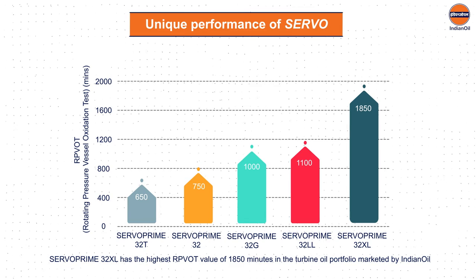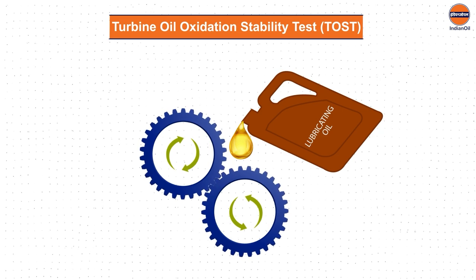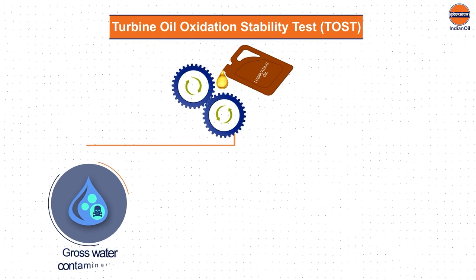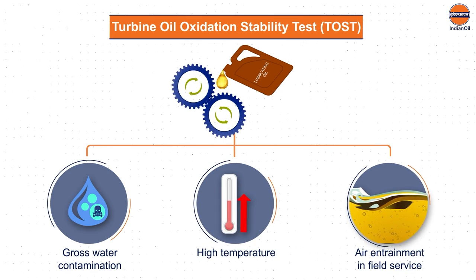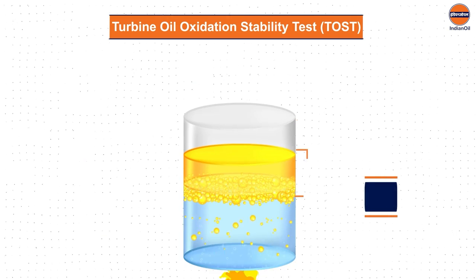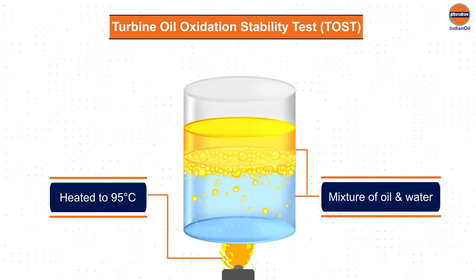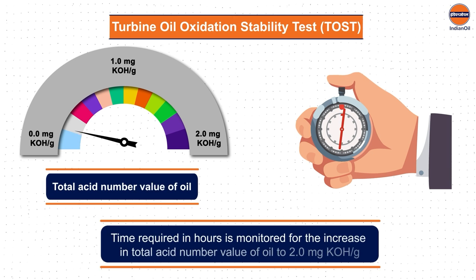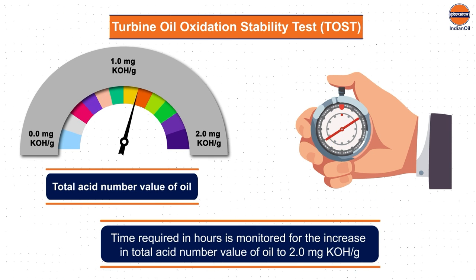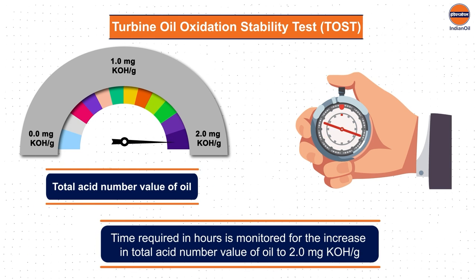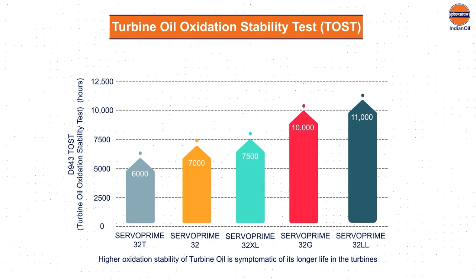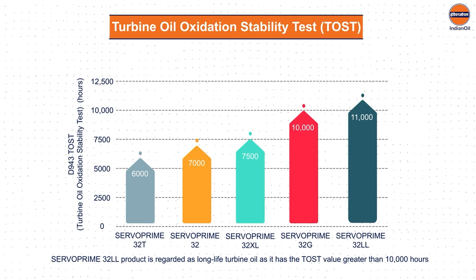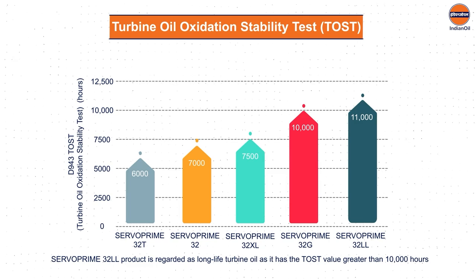Next is the Turbine Oil Oxidation Stability Test (TOST), used to indicate oil life for lubricants continuously exposed to gross water contamination, high temperature, and air entrainment in field service. In this test, a mixture of oil and water is heated to 95°C in the presence of a catalyst and oxygen to simulate severe oxidation. The time in hours is monitored for the increase in total acid number to 2.0 mg potassium hydroxide per gram. Servo Prime 32XL is regarded as a long-life turbine oil as it has a TOST value greater than 10,000 hours.